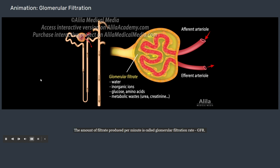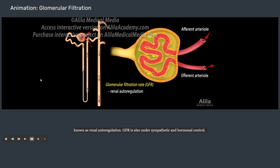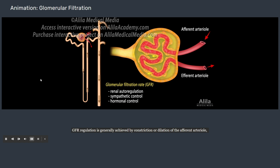The amount of filtrate produced per minute is called glomerular filtration rate. GFR is kept at a stable value by several feedback mechanisms within the kidneys, known as renal autoregulation. GFR is also under sympathetic and hormonal control. GFR regulation is generally achieved by constriction or dilation of the afferent arteriole, which causes the glomerular blood pressure to fall or rise, respectively.